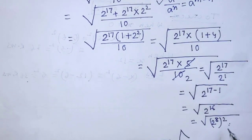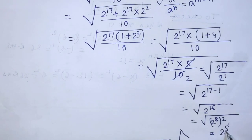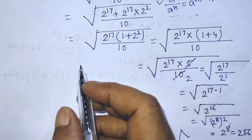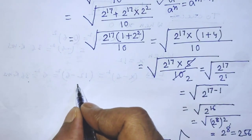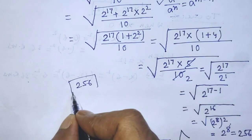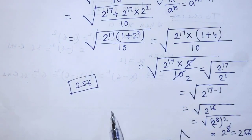So, student, the square root of 2 to the power 8, whole to the power 2, that is 2 to the power 8. So it will be 256. The answer of the given algebraic expression will be 256. This is our final answer. Our answer is complete.